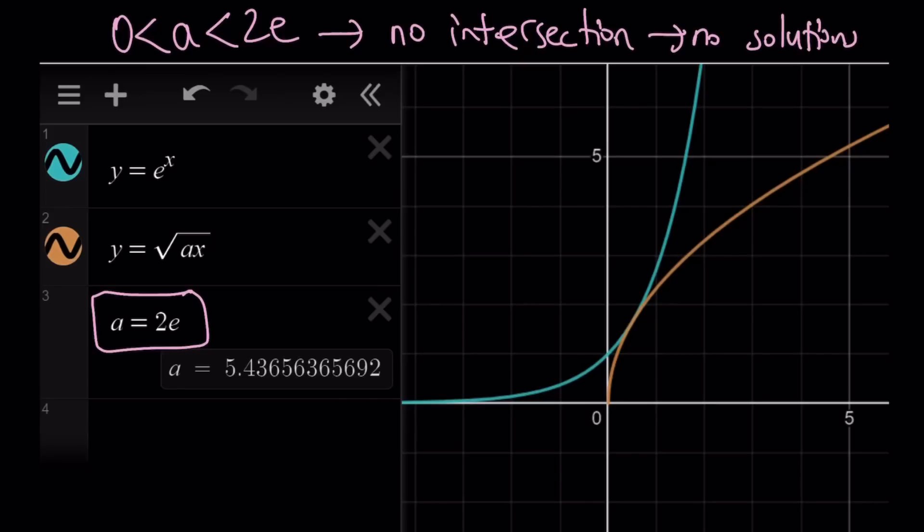And remember, for a equals 1, we said that there are no solutions because you get y equals e to the x and y equals square root of x, and unfortunately, these two graphs do not intersect. Obviously, there are infinitely many values of a for which there are no solutions. That's why a is a parameter. As you change the values of a, you're going to be getting different sets of solutions.